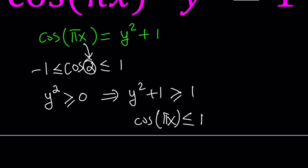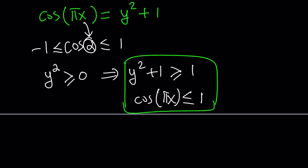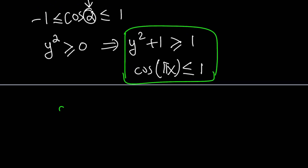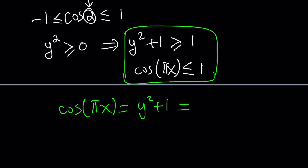So if we replace alpha with pi x, we get that cosine of pi x is less than or equal to 1. We don't care about the negative 1 because we're interested in some overlap. They overlap — can something be less than or equal to 1 and greater than or equal to 1 at the same time? Yes, if they're both equal to 1. So we have to have the equality, and thanks to the equal sign, we have a solution. This is only possible if cosine of pi x equals y squared plus 1, and they're both equal to 1.